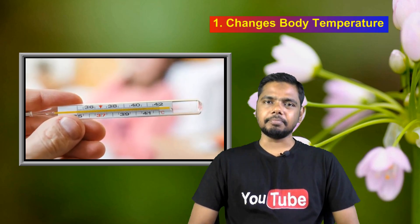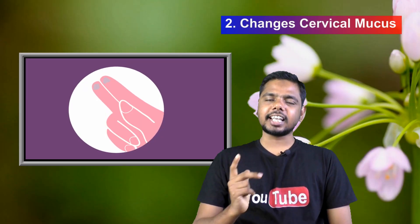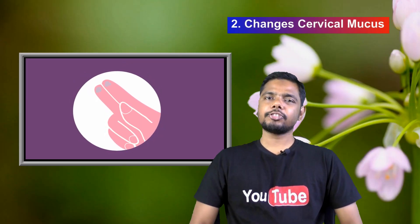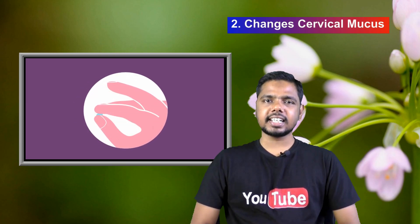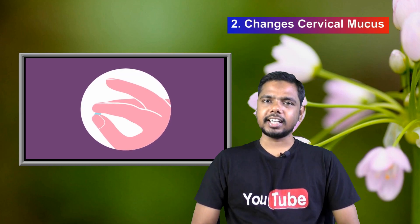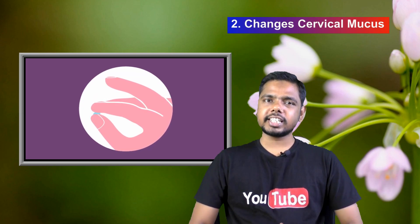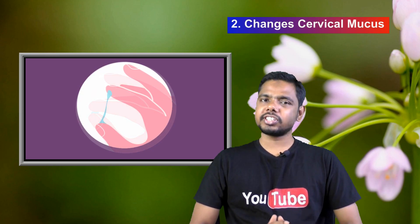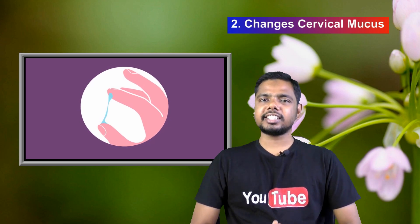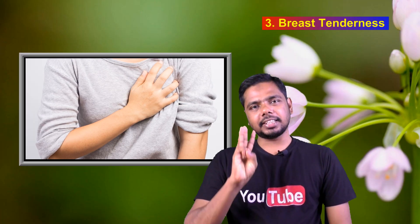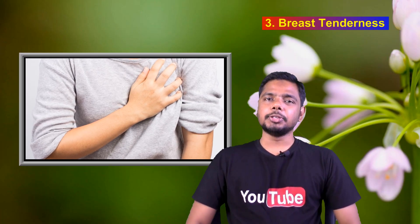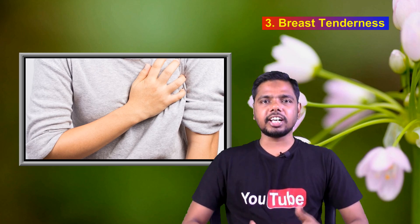Number two: changes in cervical mucus. Estrogen levels can increase during ovulation time and it may also change the consistency of the cervical mucus. You can notice your cervical mucus changing to more slippery. The most fertile cervical mucus can look similar to raw egg whites.